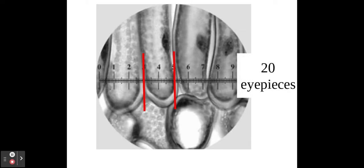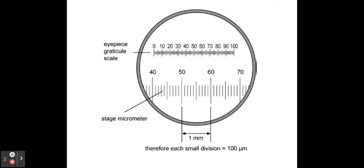As in this example and with all exam questions you do with this, I highly advise that you then calibrate it to find out what one eyepiece is. So this is what we're going to do now. I know that my specimen is 20 eyepieces long, and I'm now going to calibrate my eyepiece so I know how much each one of those tiny eyepieces is.